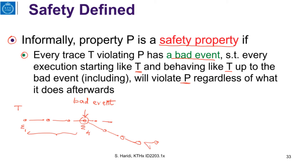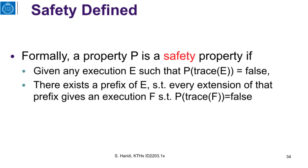Formally, a property P is a safety property if, given an execution E such that the trace of E does not satisfy P, there always exists a prefix of E such that every extension of that prefix gives an execution F whose trace also violates P.